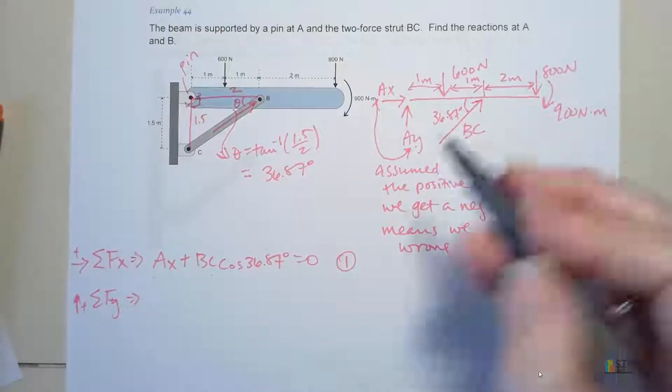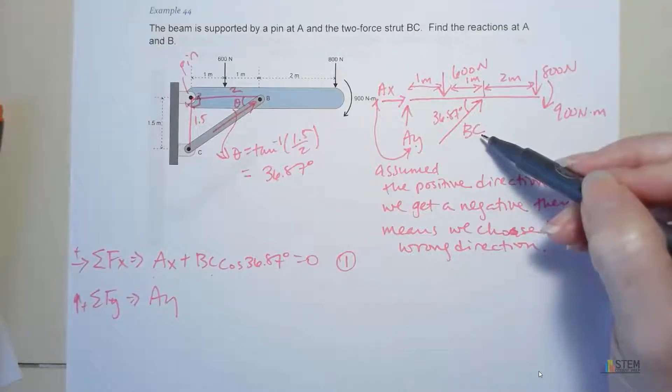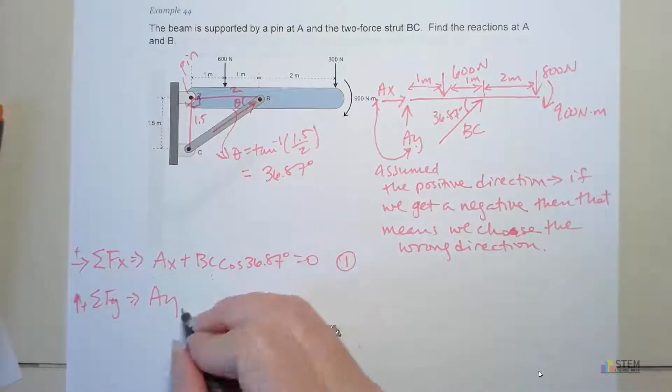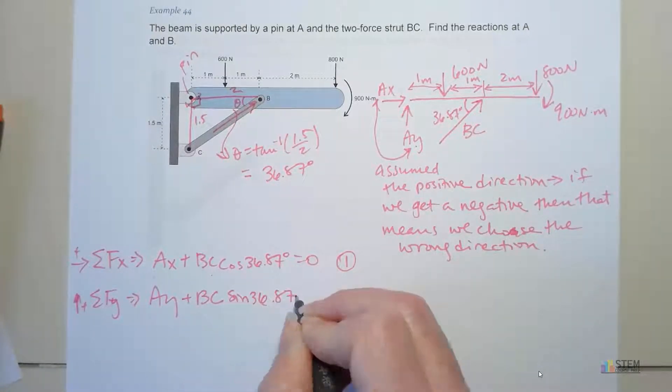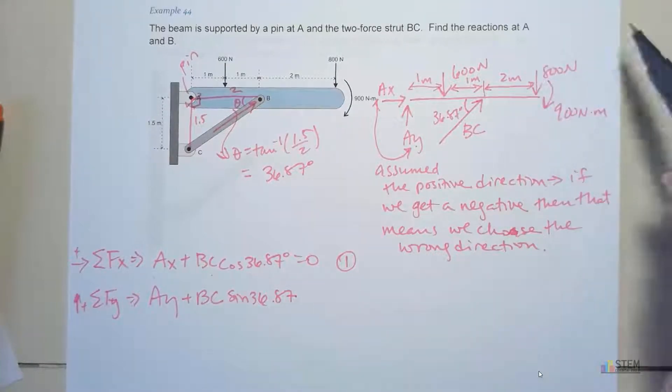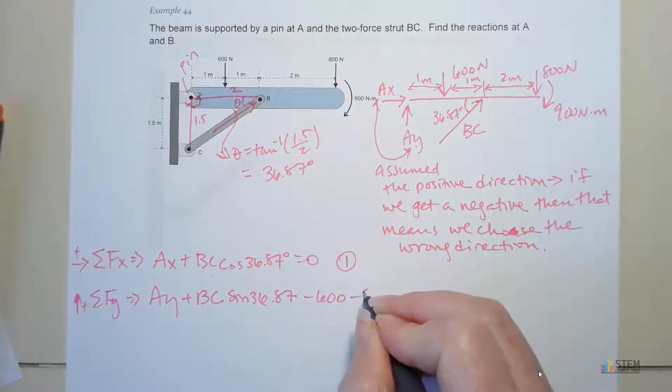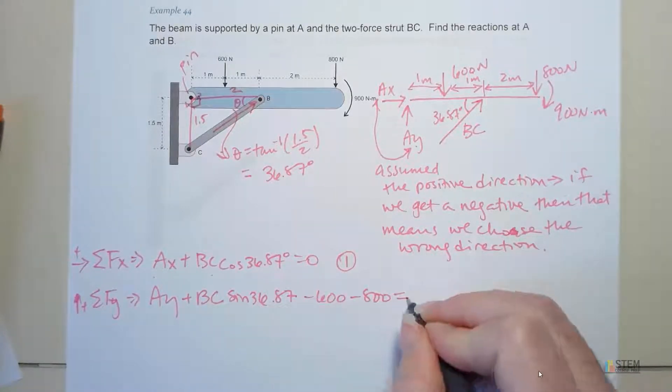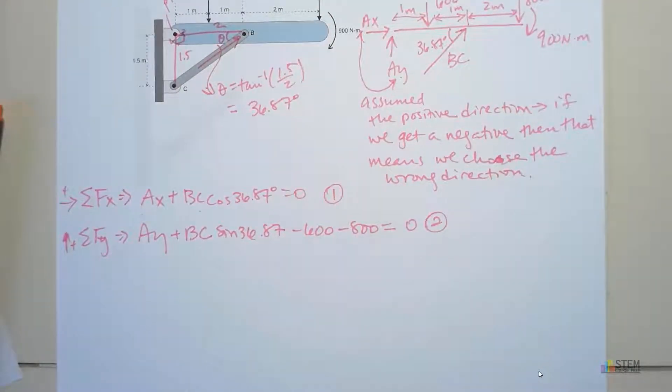Let's go to the Y equation. I'm going to say up's positive. Now I have AY. That's positive. I've got a Y component in that two-force strut. That is going to be positive because it's going up. So I have plus BC sine 36.87. What else do we got? We need this one and this one. Those are both negative. So I have negative 600 minus 800. Set that equal to zero. I'm going to call that equation two. Now we still have too many unknowns. We have three unknowns, only two equations.